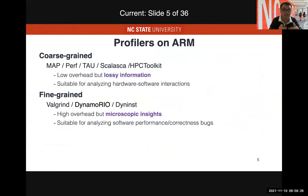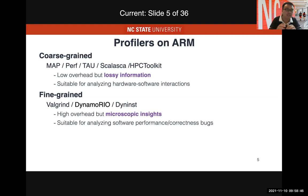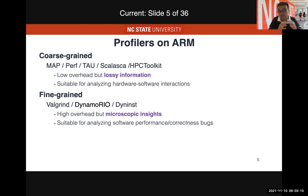There are some existing profilers on ARM, mainly categorized into two types. One is the coarse-grained profilers like ARM MAP, Linux perf, and HPC tools like Tau, Caliper, and HPCToolkit. These tools typically incur very low overhead because they rely on hardware counters, but they produce lossy information because they use sampling techniques. They are suitable for analyzing hardware-software interactions efficiently and are widely used.